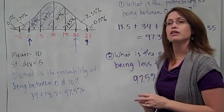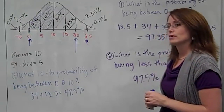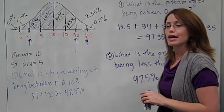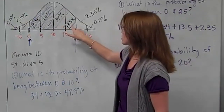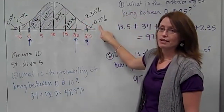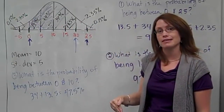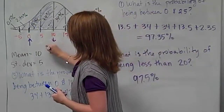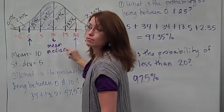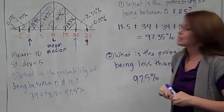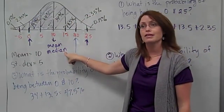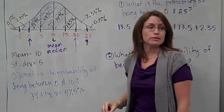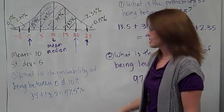What percent is above 10? 50% — because you have 34%, 13.5%, 2.35%, and 0.15% on the right side. We said 50% makes us think median, which is the 50th percentile. This point is both the mean and the median. Does that always happen? No. In a normal distribution where it's symmetric, that will happen. But in other cases with a different shape for your data set, it won't.